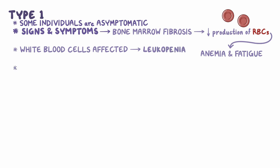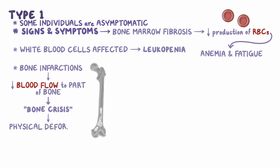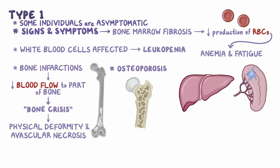There can also be bone infarctions, caused by reduced blood flow to part of a bone, which can lead to a painful bone crisis and result in physical deformity and avascular necrosis, or death of bone tissue. Osteoporosis, or low bone density, is another manifestation. Both the liver and spleen can become enlarged, and when platelets are sequestered or trapped within the enlarged spleen, this can cause thrombocytopenia, or low platelets in the blood, leading to bleeding and easy bruising.